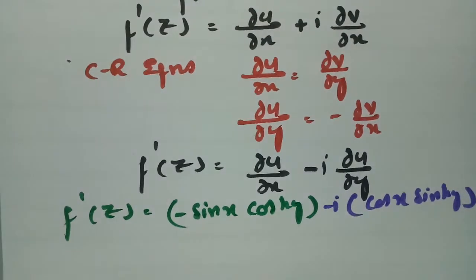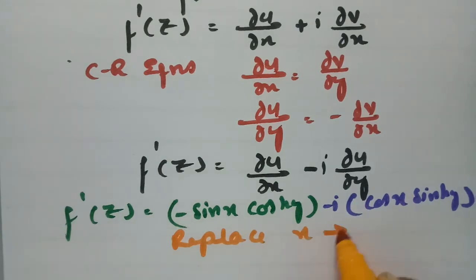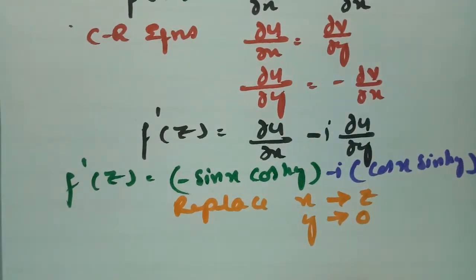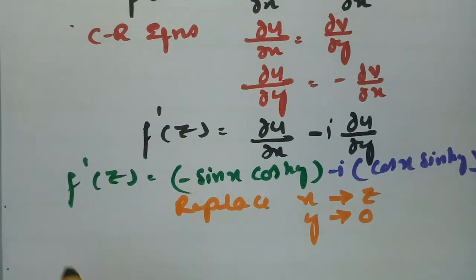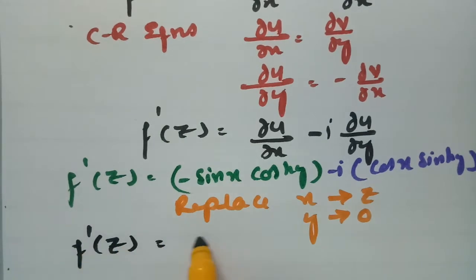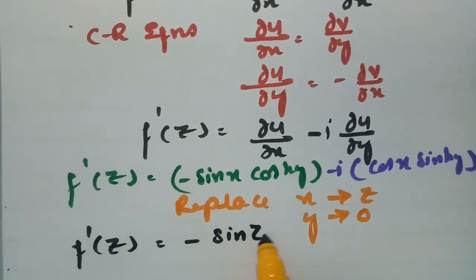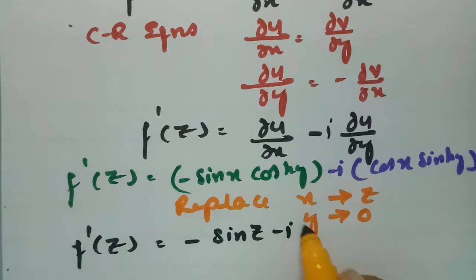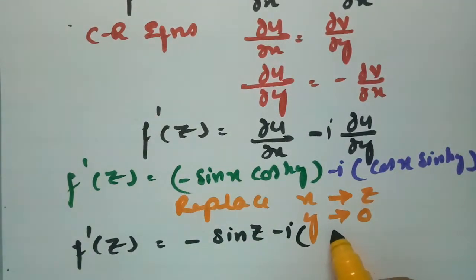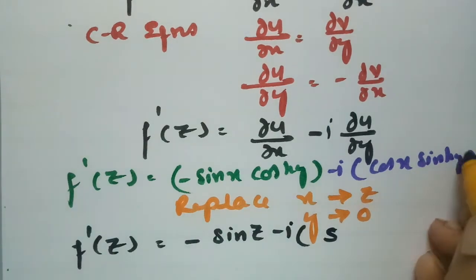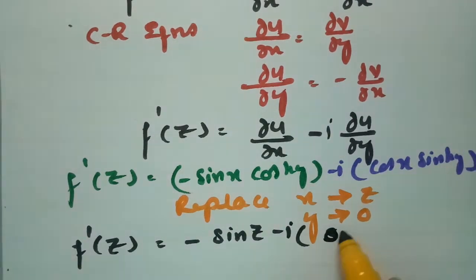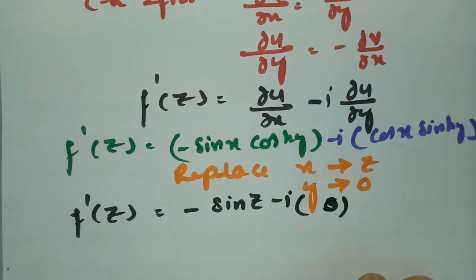In the Milne-Thompson method, we replace x by z and y by 0. So f'(z) = -sin(z)·cos(0) - i·cos(z)·sinh(0). Since cos(0) = 1 and sinh(0) = 0, the second term vanishes, and only -sin(z) remains. So f'(z) = -sin(z).